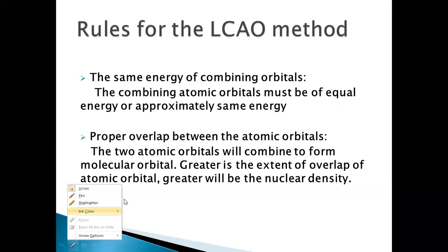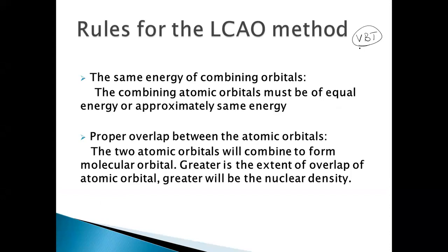According to VBT, hybridization takes place and the hybrid orbitals formed by a particular atom combine with orbitals of another atom, resulting in the formation of a molecule. But according to molecular orbital theory, the atomic orbitals of different atoms which are forming a molecule will combine, resulting in the formation of molecular orbitals.